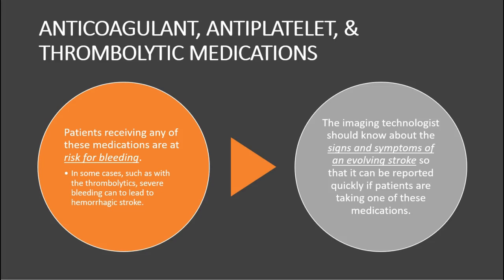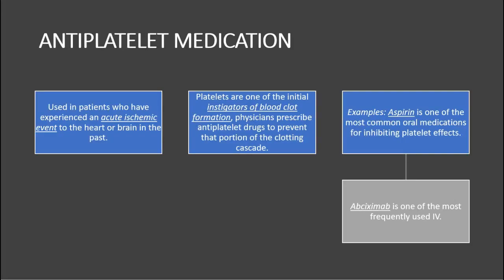Anticoagulant, antiplatelet, and thrombolytic medications — patients receiving any of these are at risk for bleeding. With thrombolytics, severe bleeding can lead to hemorrhagic stroke, so be conscious and watch for signs and symptoms of an evolving stroke. Antiplatelet medications are used in patients who have experienced an acute ischemic event to the heart or brain. Platelets are one of the initial instigators of blood clot formation, so physicians prescribe antiplatelet drugs to prevent clot cascading.